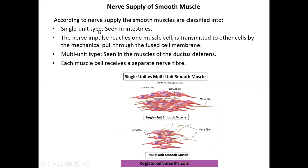Regarding the nerve supply of smooth muscles, there are two types. In the single unit type, a single nerve fiber reaches the muscle and forms varicosities at different parts. One smooth muscle contracts initially, and because of the fused cell membranes of smooth muscle, the action is transmitted to adjacent cells. In the multi-unit type, each muscle fiber is supplied by a single nerve fiber. Multi-unit type is seen in the vas deferens of the male reproductive system, while single unit type is seen in the intestine.